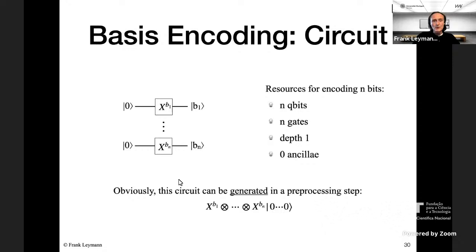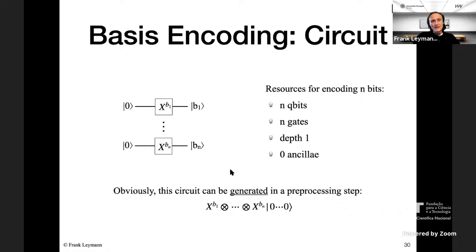For basis encoding: compute the binary representation with digits b_1 through b_n. If b_i is zero, X to the power of zero does nothing; if b_i is one, X flips the zero state to the one state. This is how you materialize a natural number in quantum state. You need n qubits — no surprise — and Pauli X gates with depth one, and no ancilla qubits. Very nice encoding.